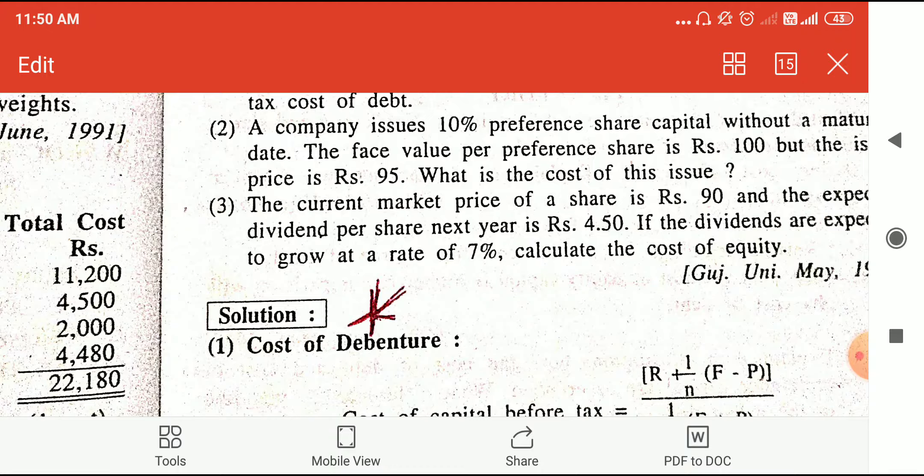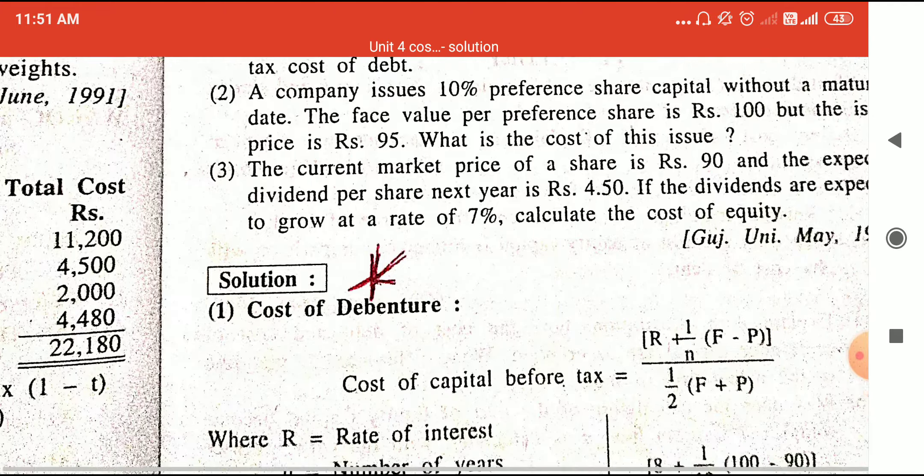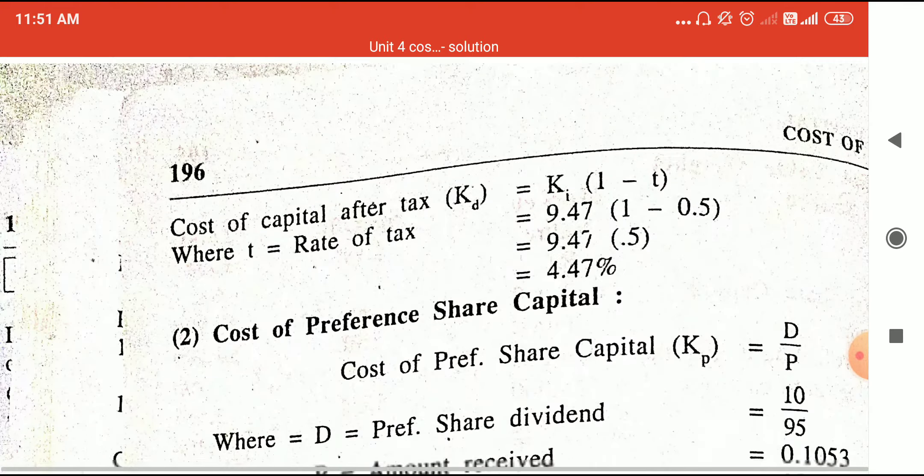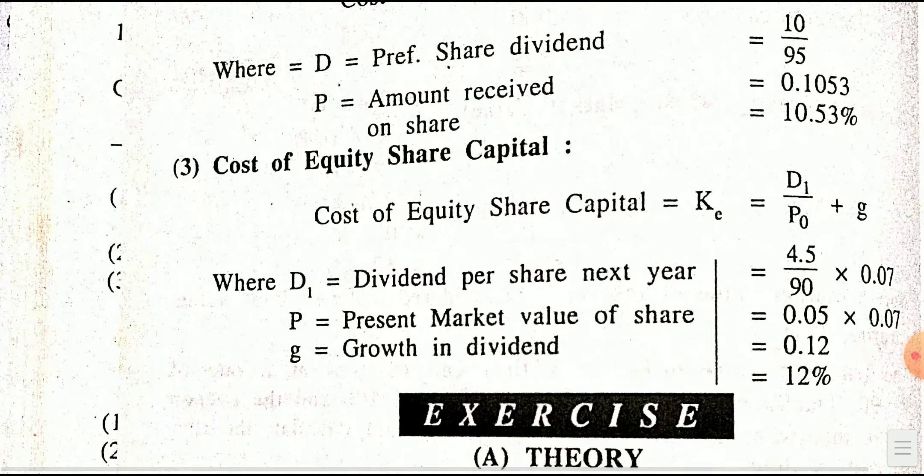For equity: D1 upon P0 plus G. D1 is given as 4.5 (next year's expected dividend), P0 (market price) is 90, and growth rate G is 0.07. So cost of equity is 12%. This is the cost of capital.